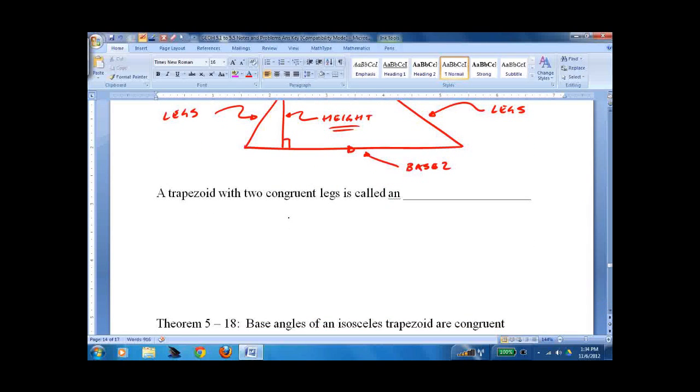A trapezoid with two congruent legs. Remember, it's already got one pair of parallel sides. This is an isosceles trapezoid.